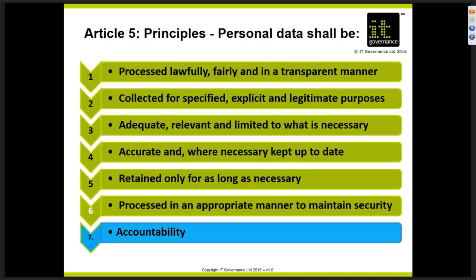The policy that might apply to the minimization principle is the requirement to do a Privacy Impact Assessment, looking at how the principles apply to a particular processing activity and at the adequacy of the data collected. Principle four: information must be kept accurate and where necessary kept up to date. You may need policies around information integrity — for example, sending an annual communication to data subjects to verify their details.